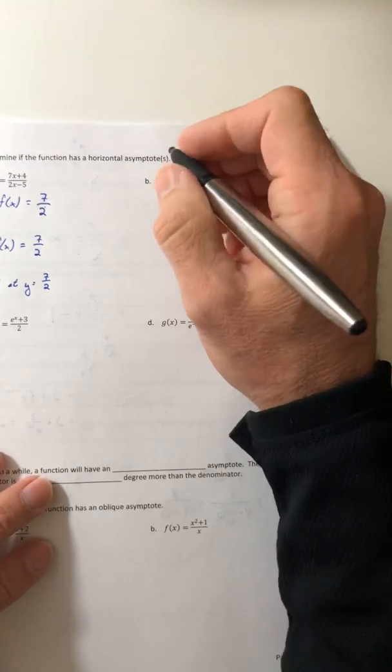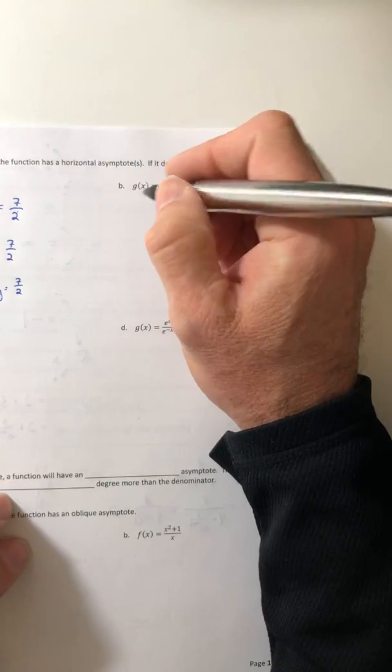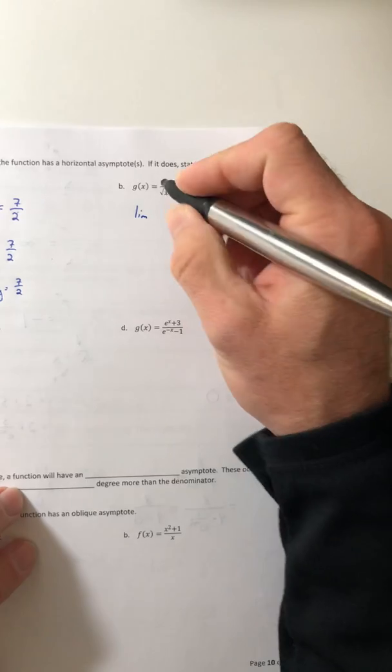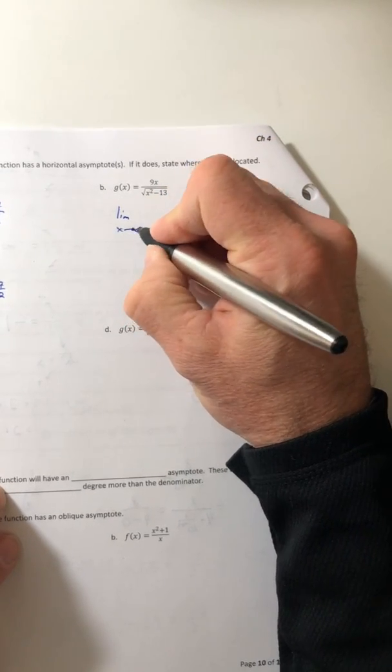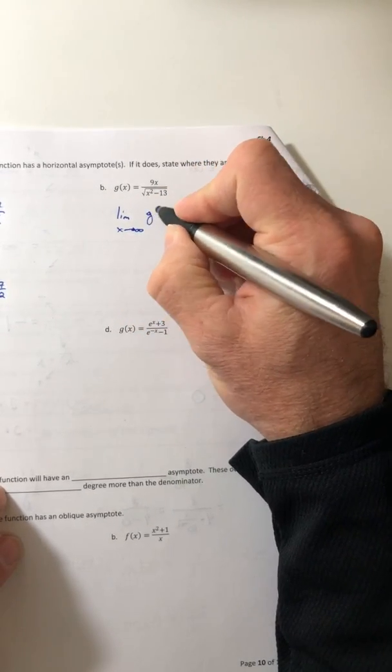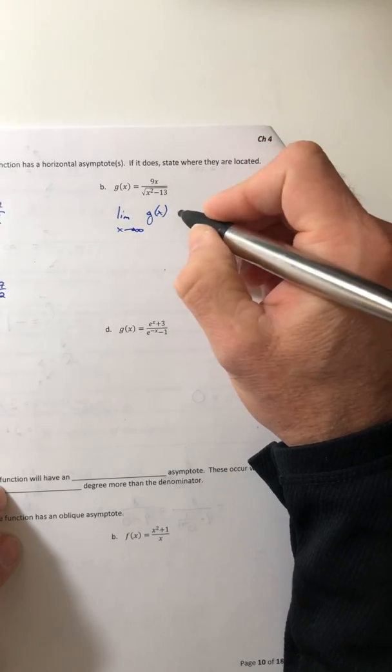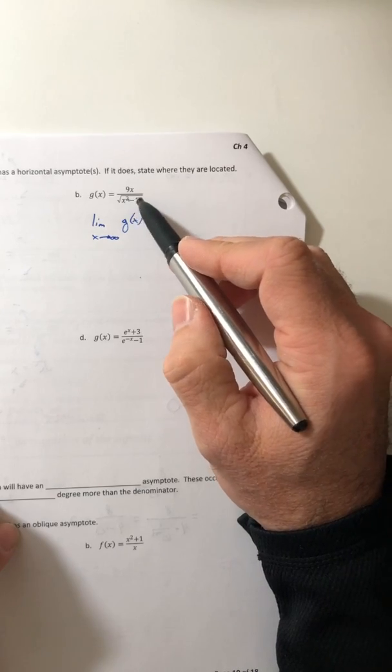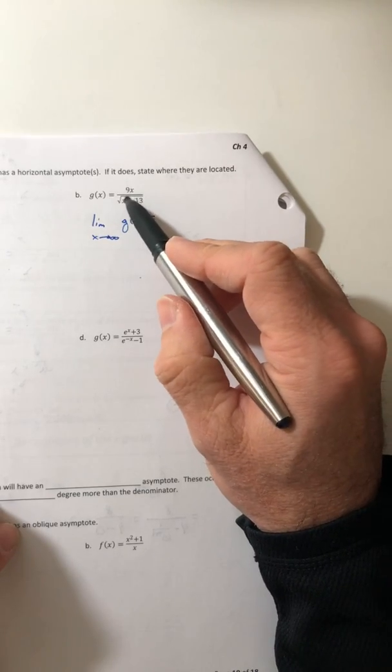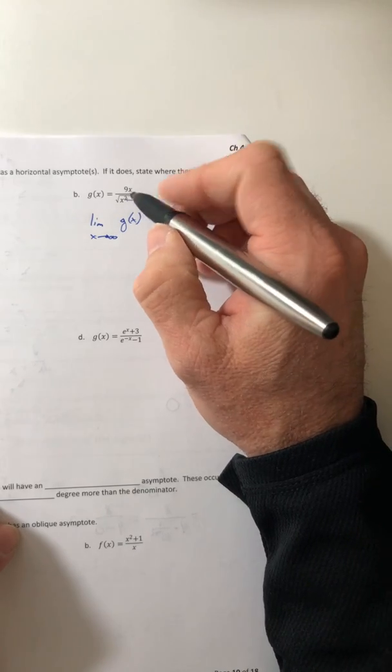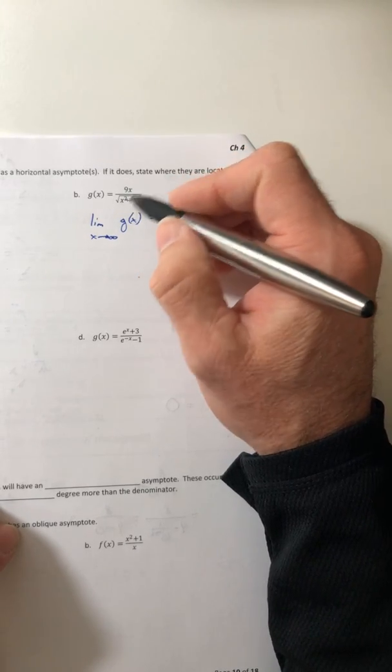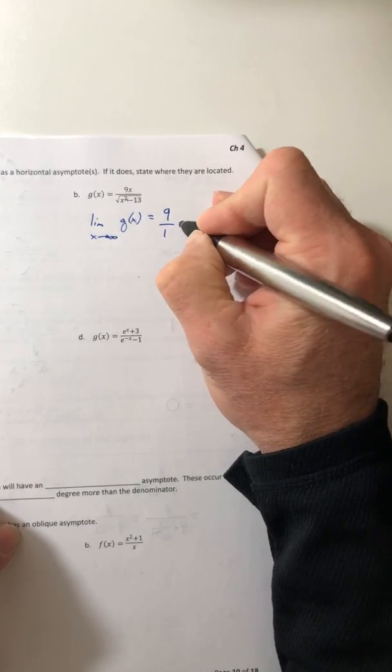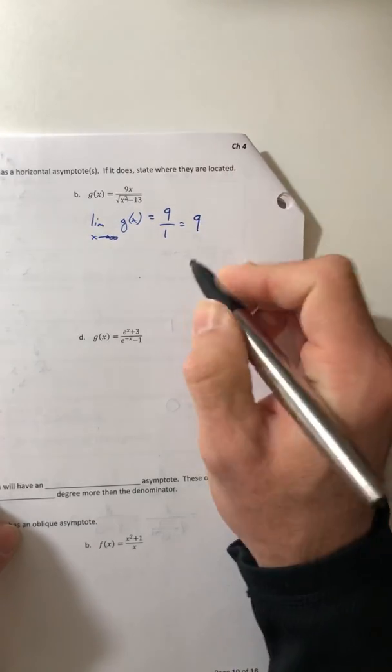So like for example, part b. Because with g of x, if you did the limit as x goes off to infinity of g of x, you can ignore the negative 13. If you square root of the x squared, that's just an x. Well, the degrees are now equal, a tie. So 9 over 1 would just give you 9.